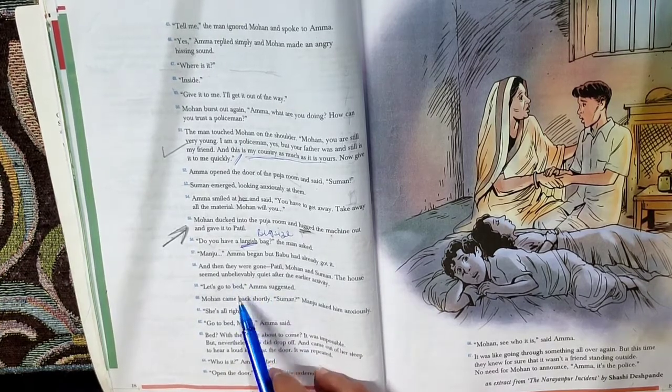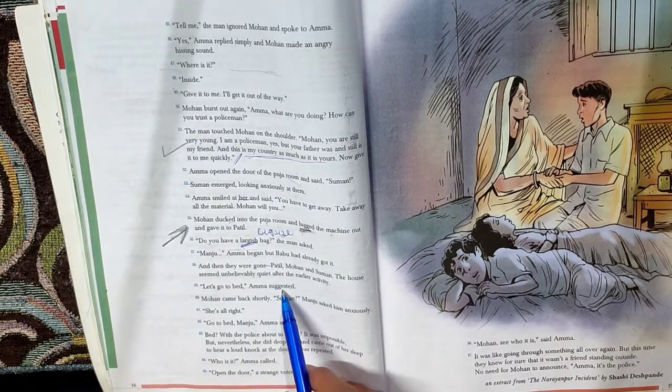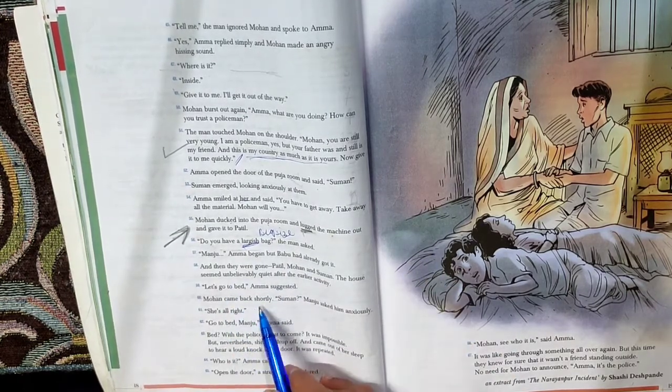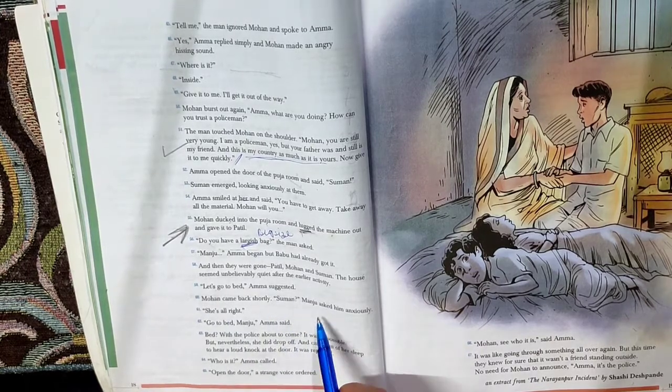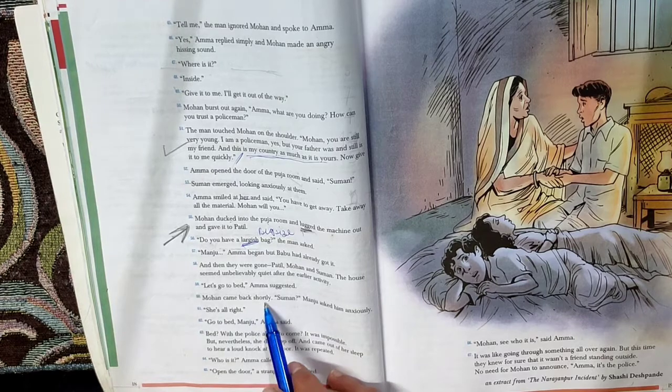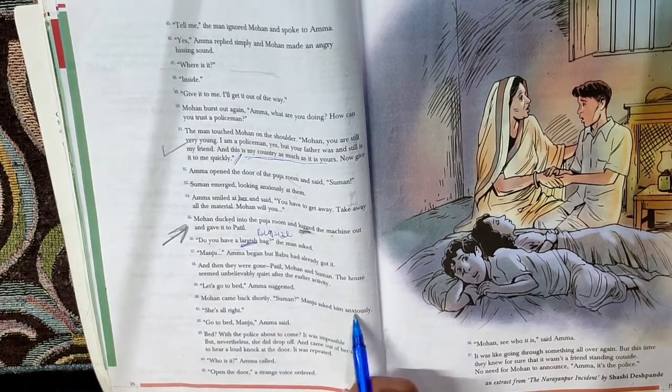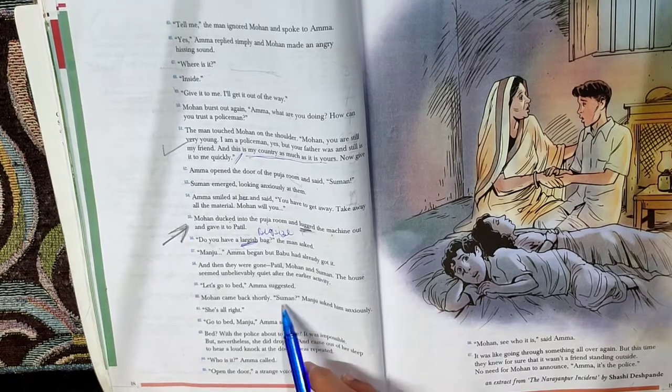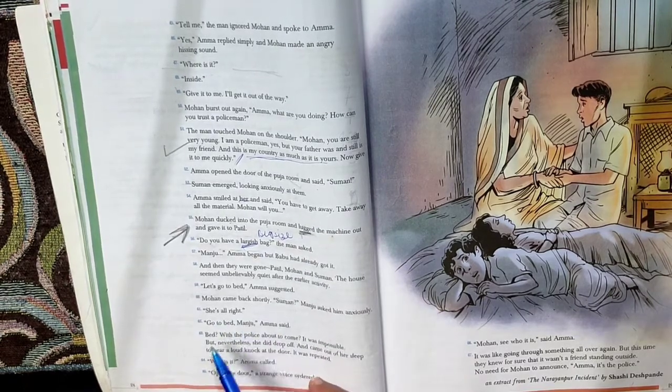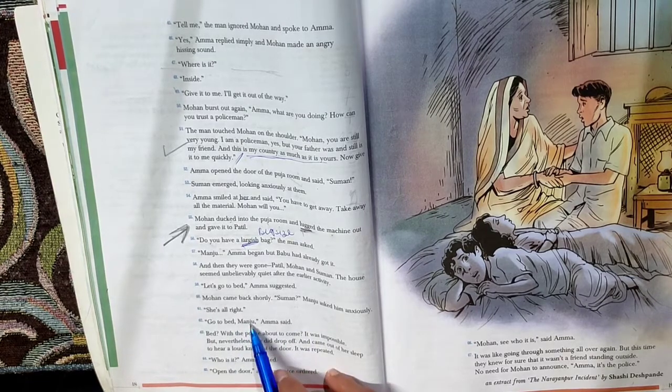Let's go to bed, Amma suggested. Now Amma tells who's left, Babu and Manju, to go to bed. Mohan came back shortly. Suman? Manju asked him anxiously. She's alright. Now Mohan comes back shortly, he comes immediately. What about Suman? Manju asked Mohan, where is Suman? So he says she's alright. Go to bed Manju, Amma said. So Amma wants Manju now to sleep.